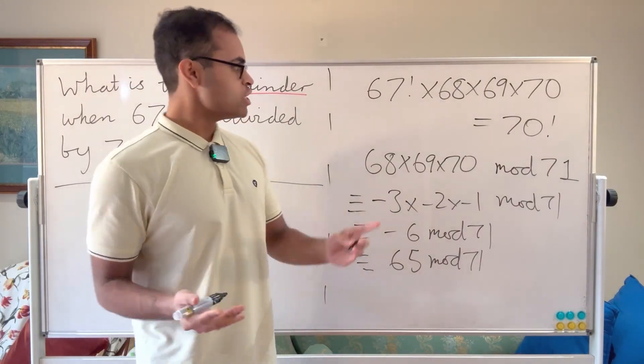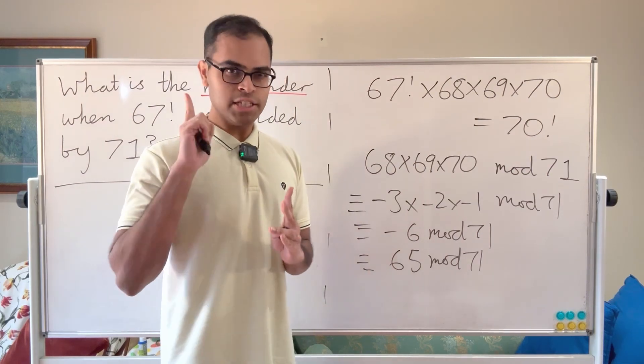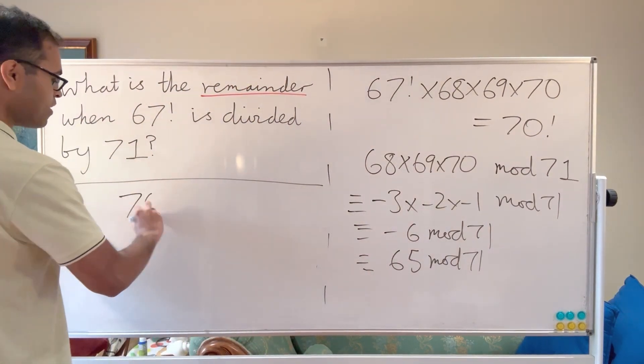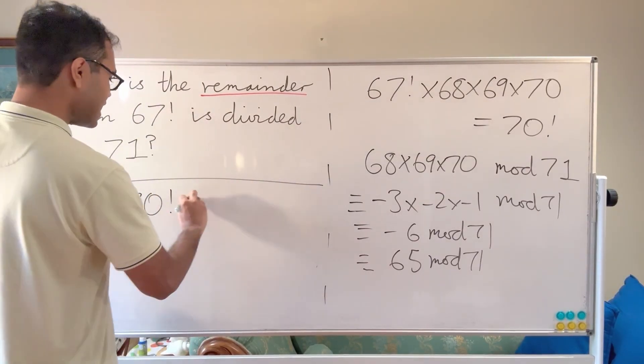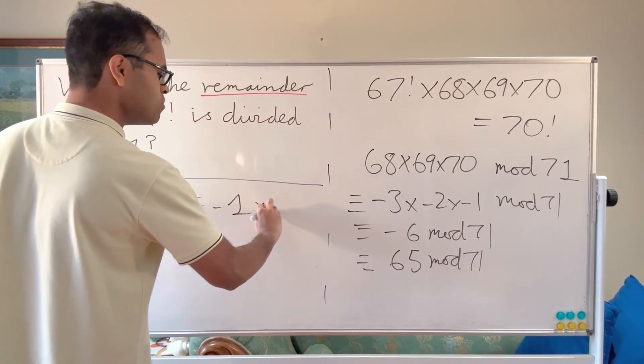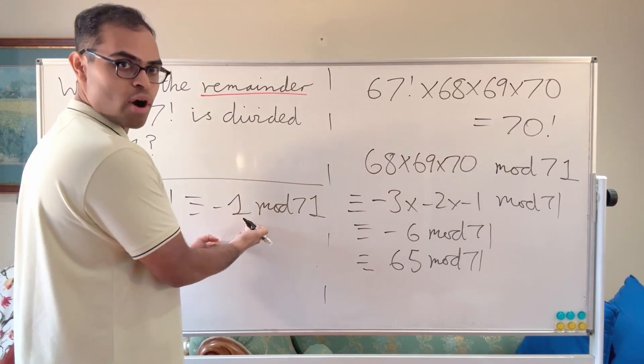So how are we going to use this information to find 67 factorial mod 71? Now here's a beautiful trick—just bear with me for a minute. 70 factorial seems like it's really complicated mod 71. It's actually congruent to minus 1 mod 71. Its remainder when you divide by 71 is 70 or negative 1.